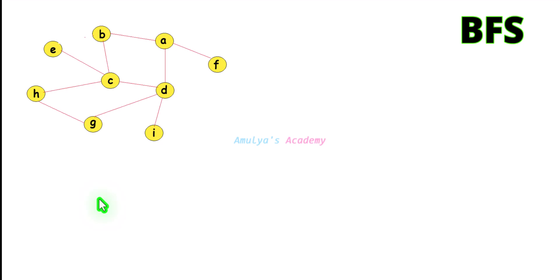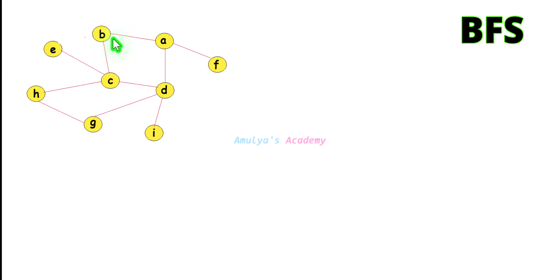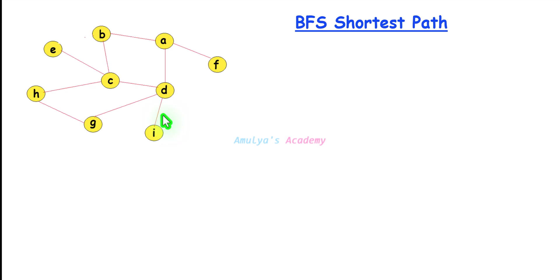BFS algorithm can be used to find the shortest path between two nodes. For example, if I want to find paths between B and F, there are many: B-A-F, B-C-D-A-F, or B-C-H-G-D-A-F — there are many. But the shortest path is B-A-F. Similarly, between B and D, both B-C-D and B-A-D are shortest paths. BFS algorithm helps us find one of the shortest paths in the graph between two nodes.